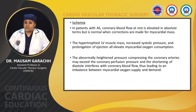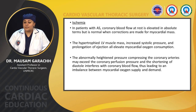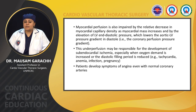Ischemia: In patients with aortic stenosis, coronary blood flow is elevated in absolute terms but normal when corrected for myocardial mass. Hypertrophied LV muscle mass, increased diastolic pressure, and prolonged ejection all elevate myocardial oxygen consumption. Abnormally heightened pressure compressing the coronary arteries may exceed coronary perfusion pressure, and shortening of diastole interferes with coronary blood flow, leading to an imbalance between myocardial oxygen supply and demand. Myocardial perfusion is also impaired by a relative decrease in myocardial capillary density. This underperfusion may be responsible for subendocardial ischemia, especially when oxygen demand is increased or diastolic filling period is reduced, for example in tachycardia, anemia, infection, or pregnancy.